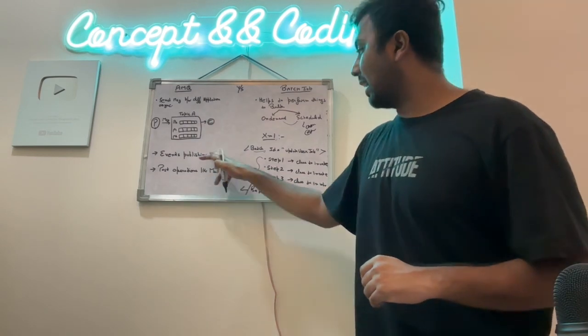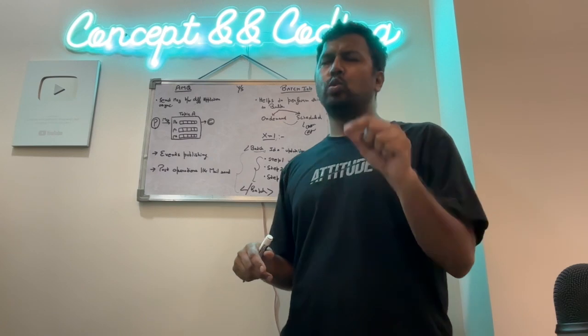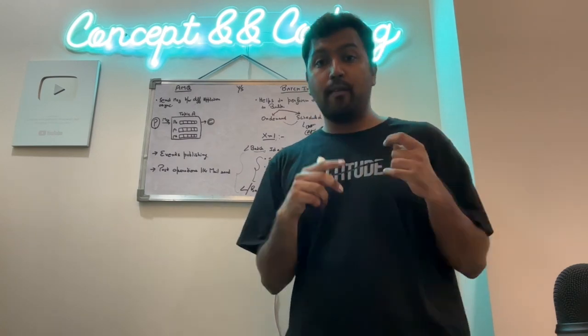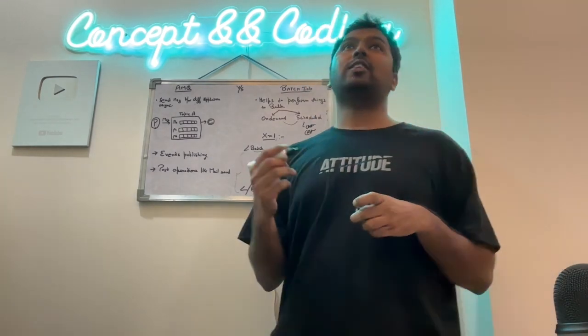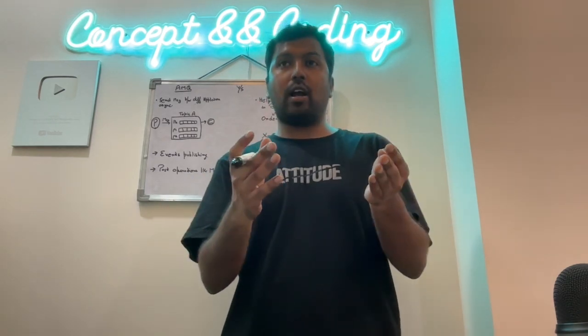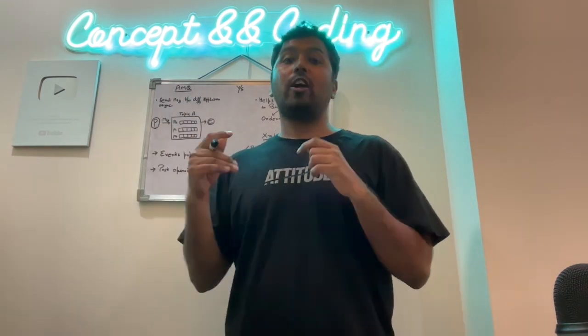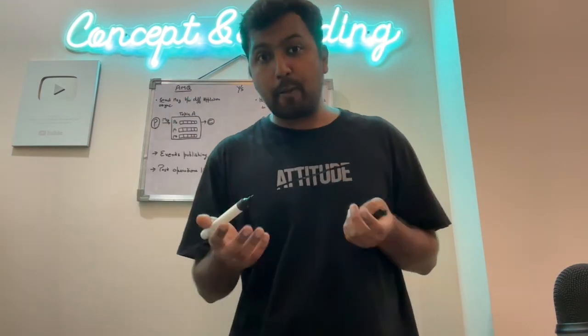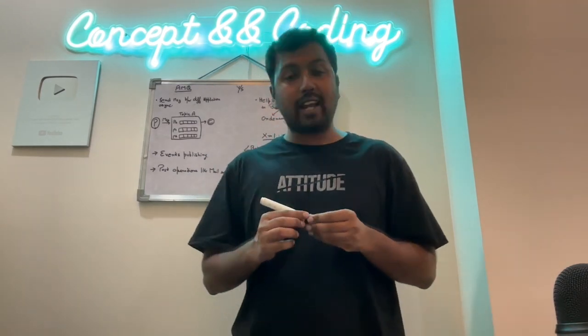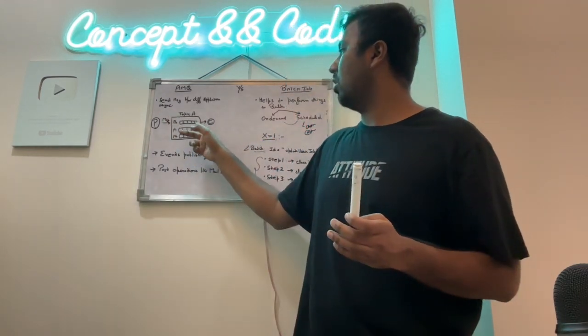So where exactly it's used. Two places AMQ is used a lot. First place, doing post operation. Now, let's say I am trying to add a user, I have added it. So I called an API, add user, and user I have added. Now there are so many post operations which can be performed, like I have to send a mail. So sending a mail can be done via AMQ because asynchronously it can take even 10 minutes, 5 minutes, we don't know.